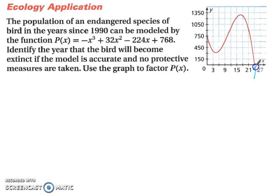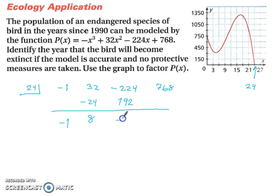Alright, so this point right here is at 24 since we're going up by 3's each time. So we have 24, and we have negative 1, a positive 32, a negative 224, and a positive 768. So we have carried on our negative 1, 24 times negative 1 gives you negative 24, leaves us with 8 when we add vertically. 24 times 8 is 192, add vertically, that leaves you with negative 32. 24 times negative 32 is negative 768, which is 0.